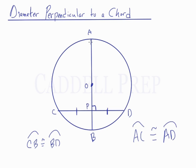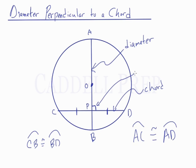The very important thing is you have to have a diameter and a chord, and they must be perpendicular to each other. If that's the case, we get two pairs of congruent arcs and also the diameter bisects the chord.